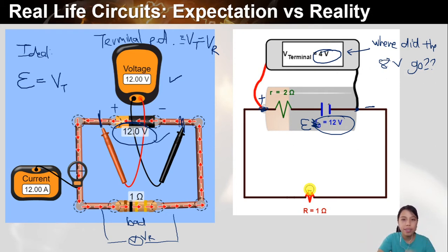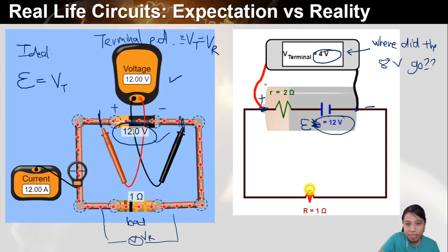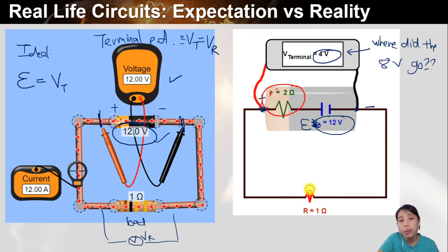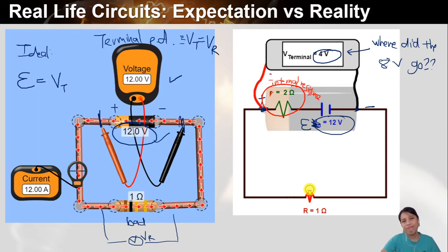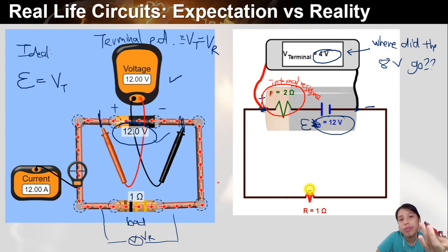The answer is: there's a culprit inside the battery itself that is stealing your energy. This thing is what we call small r — internal resistance. This is how a real-life battery is. No battery is perfect. Inside the battery itself, you have a resistor and it's getting hot — you're losing energy.